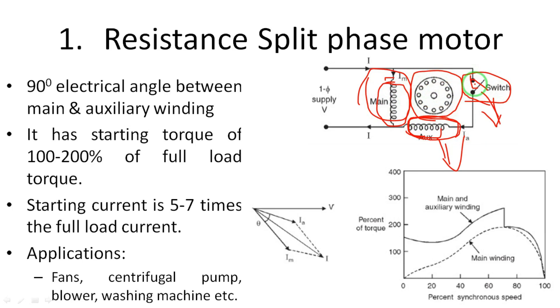When the machine is started, the switch will automatically switch off. It has starting torque of 100 to 200 percent of full load torque. Starting current is 5 to 7 times the full load current. If you observe the graph, the start line indicates the main winding and this line indicates the main and auxiliary winding.